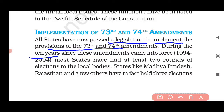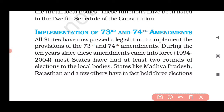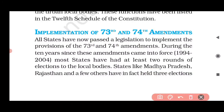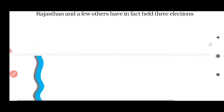Implementation was to happen within 10 years, with these amendments coming into force from 1994. By 2004, most states had held at least two rounds of elections at the local body level. States like Madhya Pradesh and Rajasthan and a few others had already held three elections.